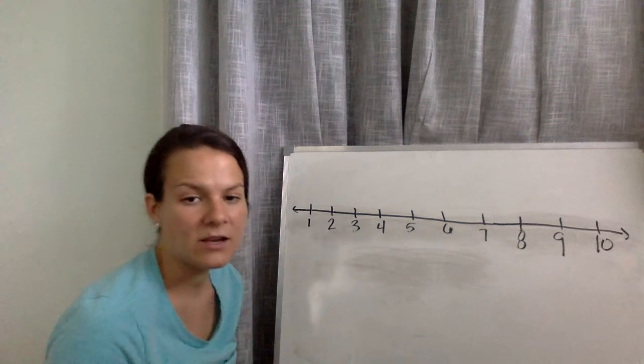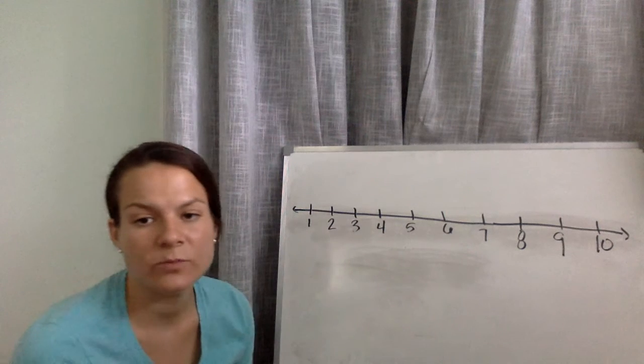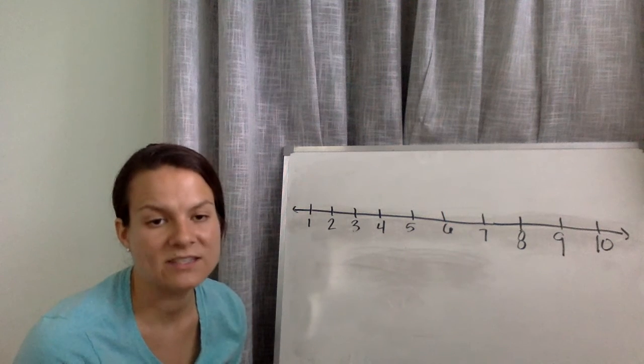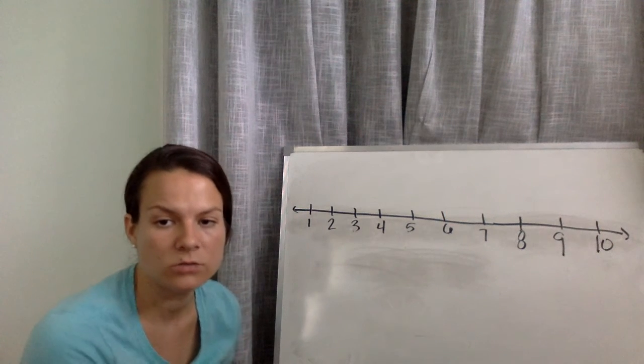Alright, so I'm going to pick a number, and then we're going to look at our number line and find the number that is one more. That means it's going to be bigger than the number that we chose.